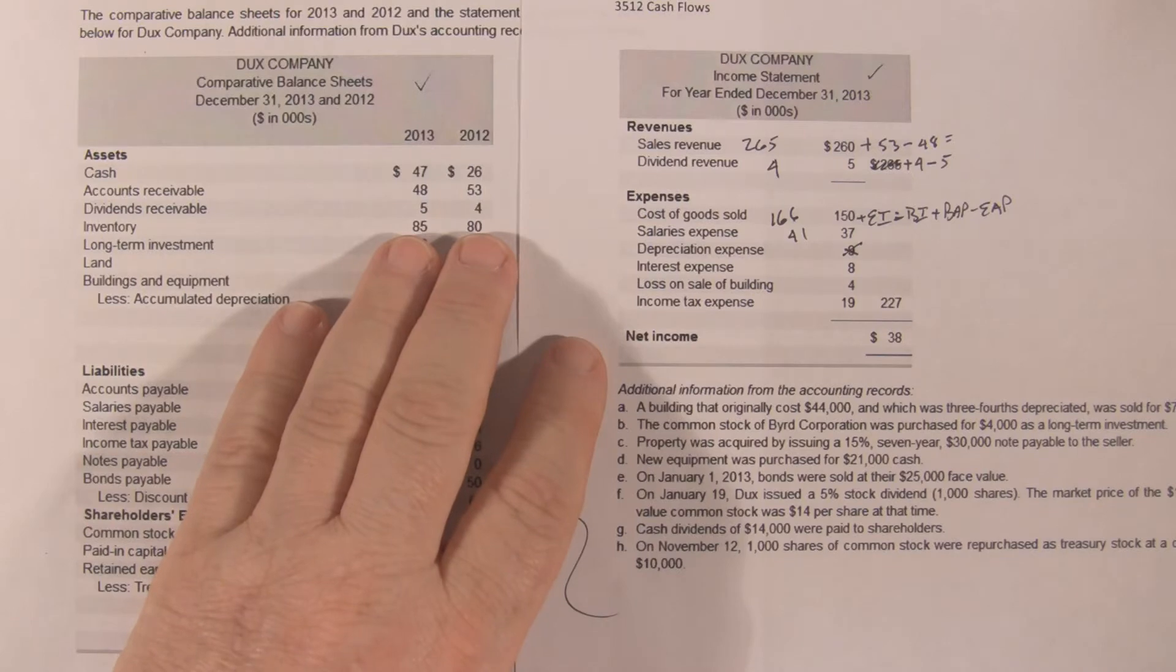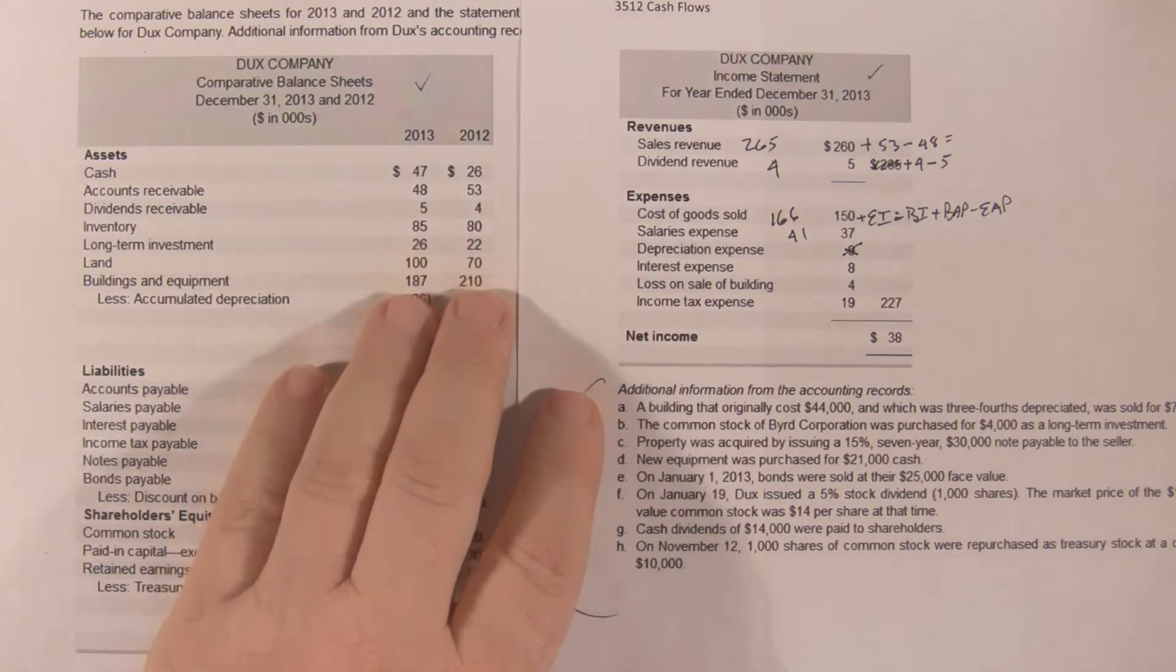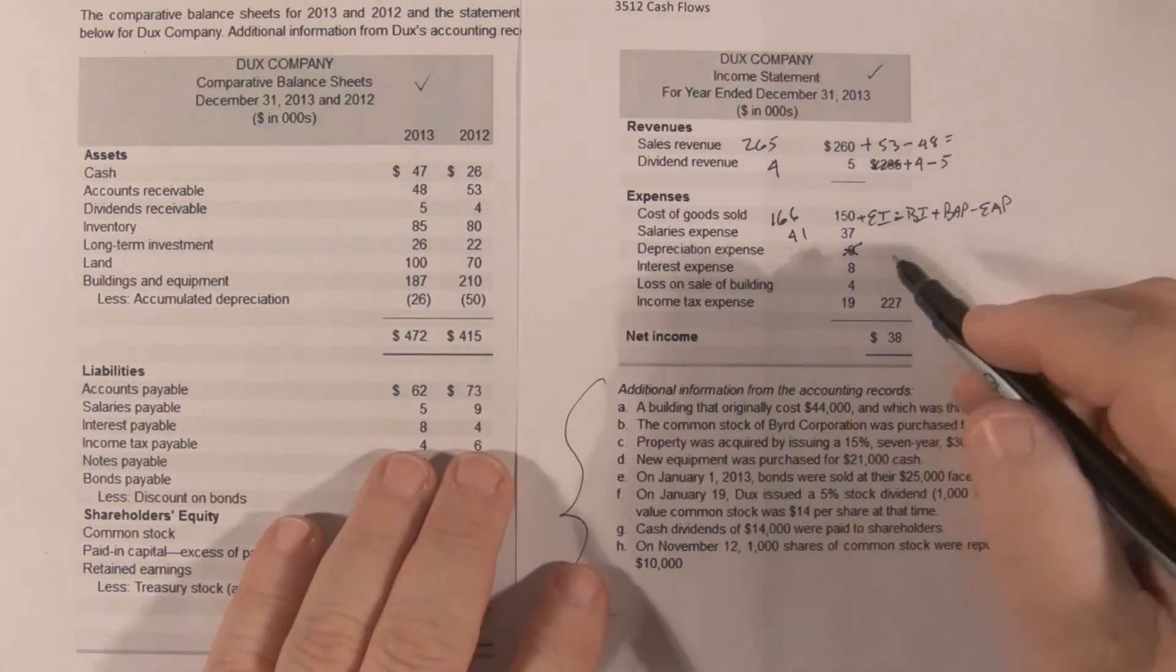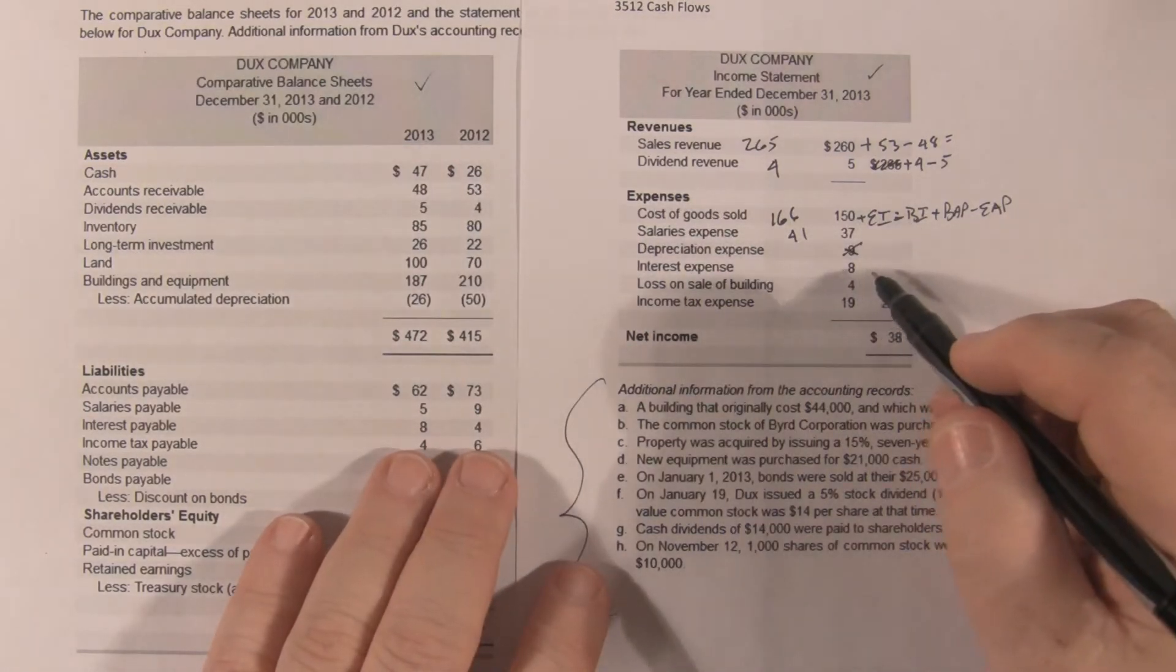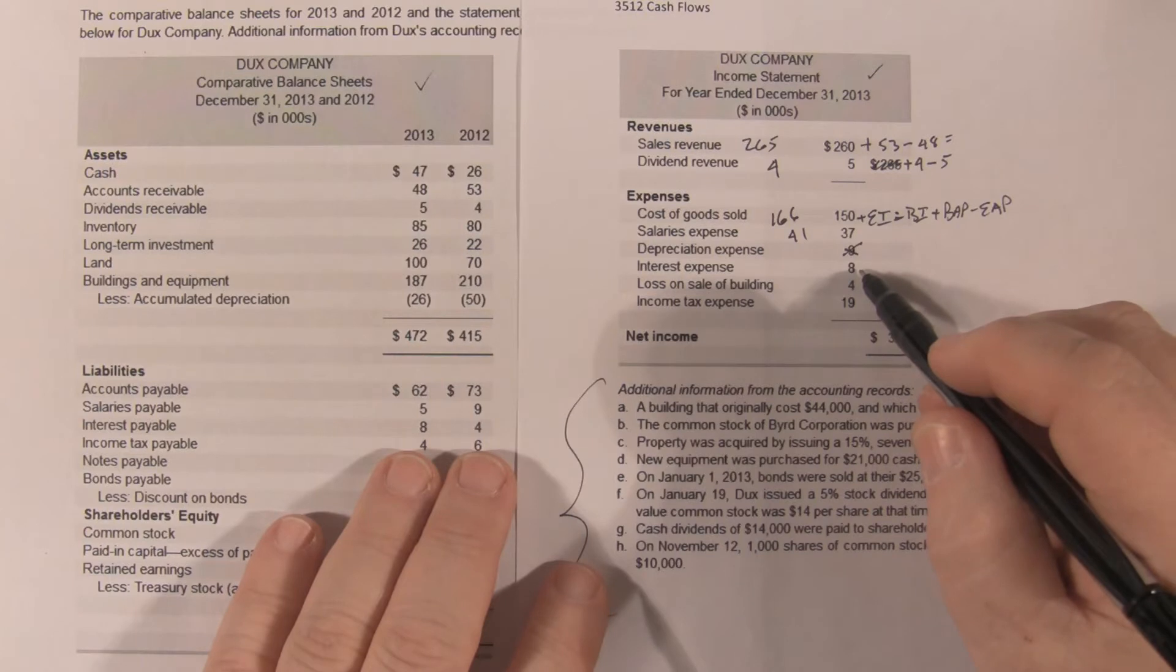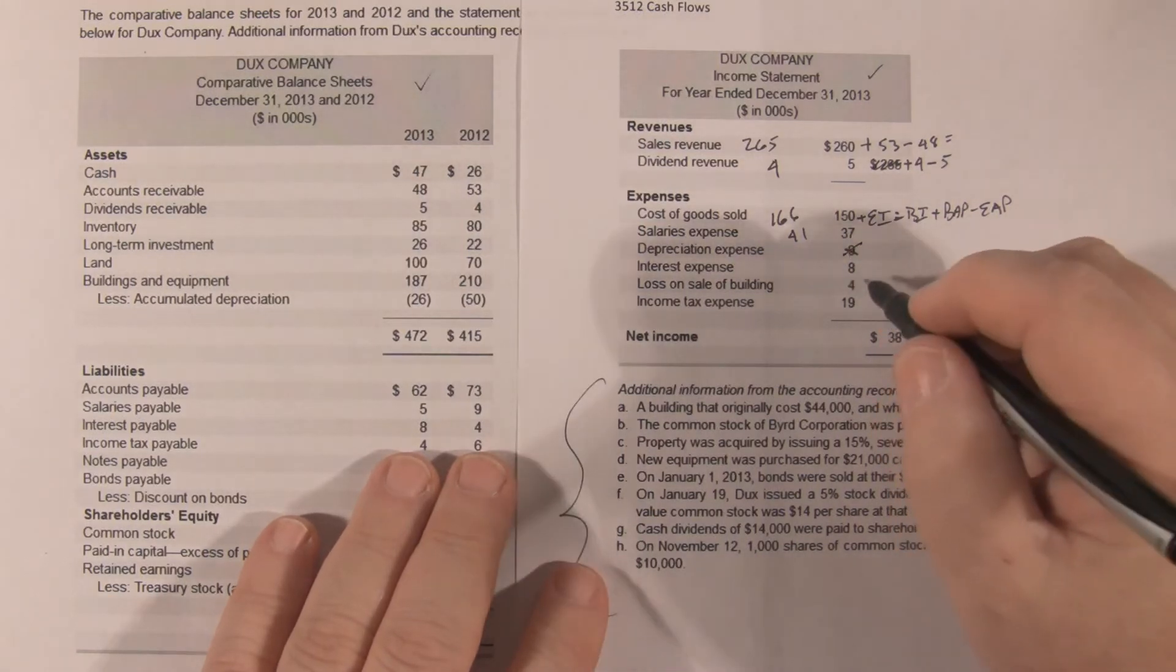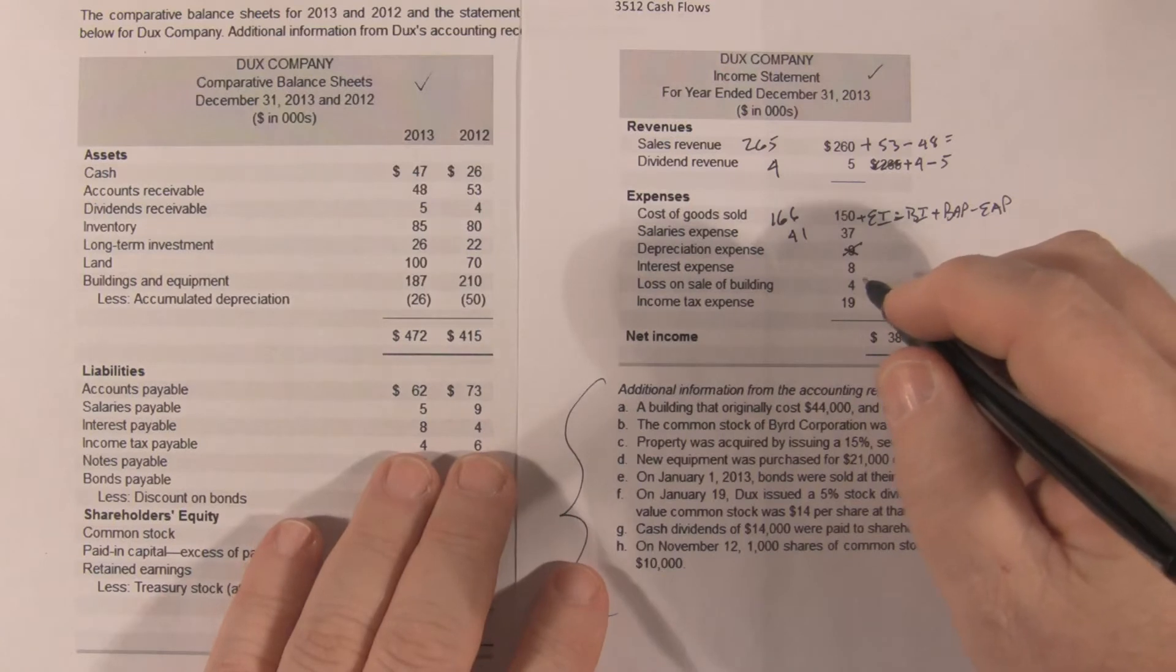Interest expense is interest expense plus beginning interest payable, 4, minus ending interest payable, 8. So we start with the interest expense of 8, plus 4, minus 8. So cash paid for interest is what? 8 plus interest payable.